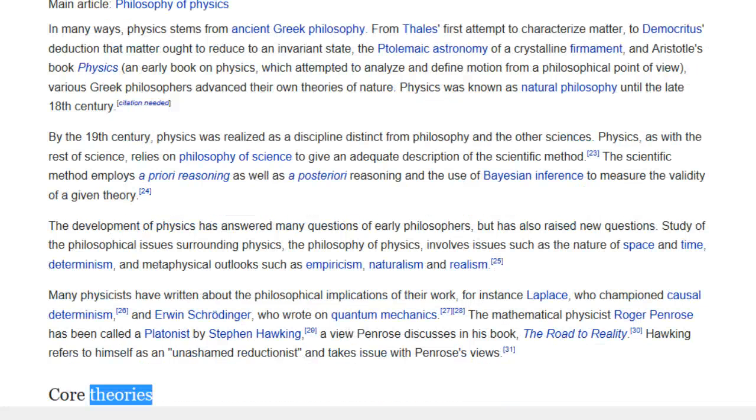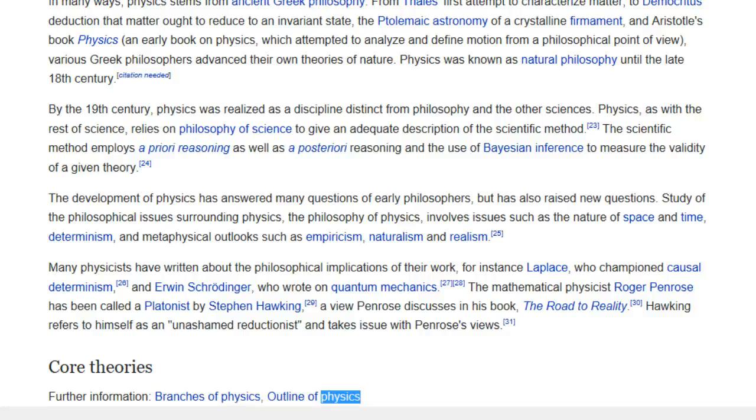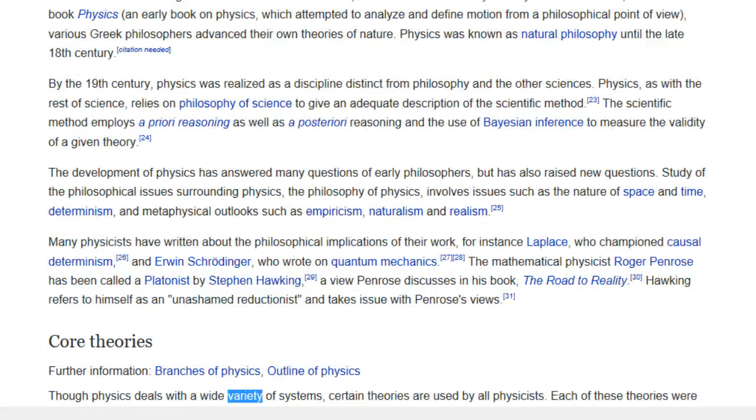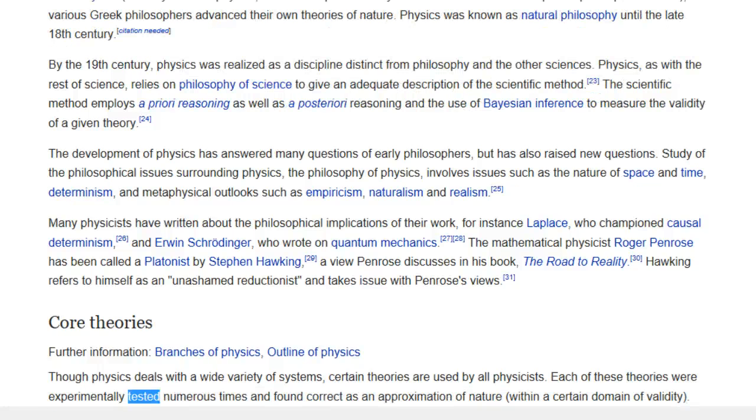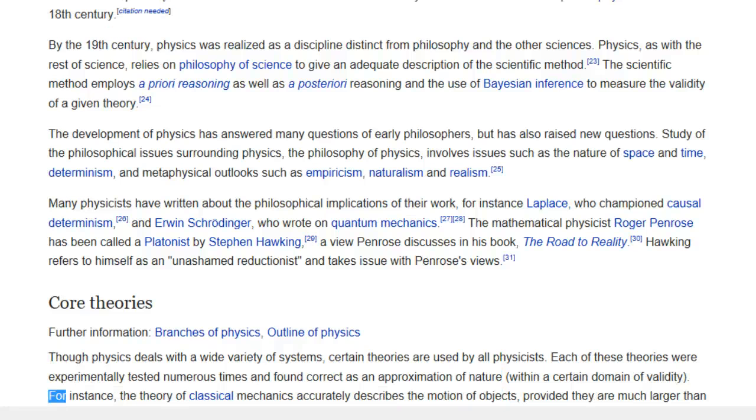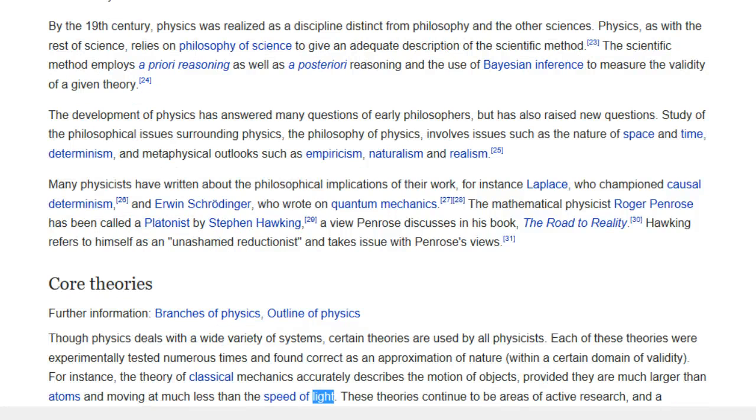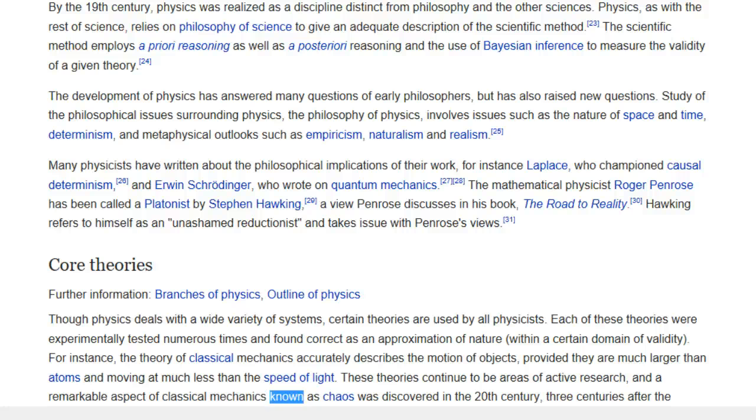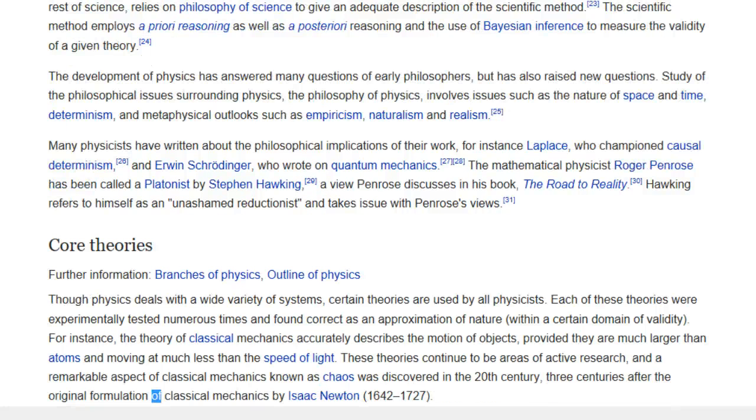Core theories. Further information, branches of physics, outline of physics. Though physics deals with a wide variety of systems, certain theories are used by all physicists. Each of these theories were experimentally tested numerous times and found correct as an approximation of nature, within a certain domain of validity. For instance, the theory of classical mechanics accurately describes the motion of objects, provided they are much larger than atoms and moving at much less than the speed of light. These theories continue to be areas of active research, and a remarkable aspect of classical mechanics known as chaos was discovered in the 20th century, three centuries after the original formulation of classical mechanics by Isaac Newton, 1642-1727.